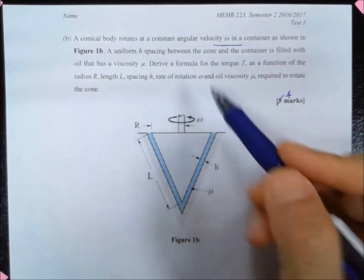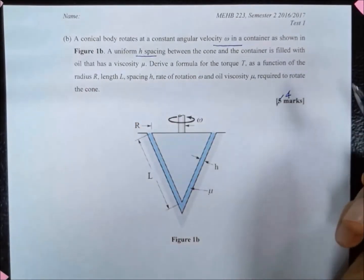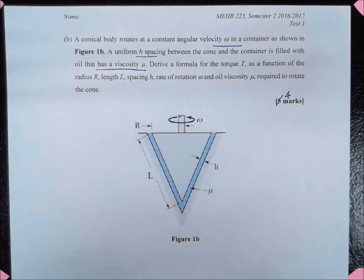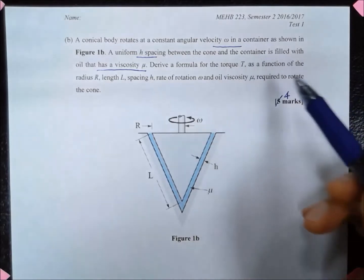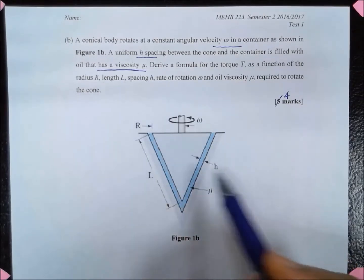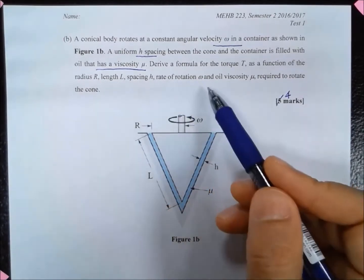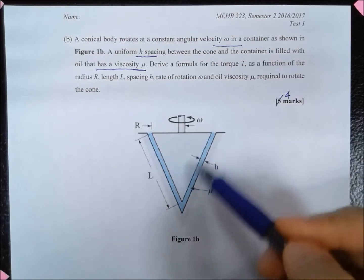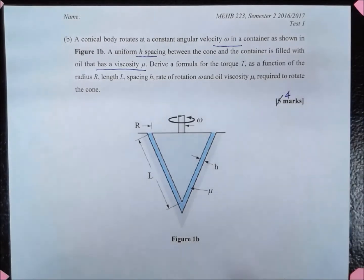The spacing between the cone and the container is equal to h, and the space is filled with oil which has viscosity mu. We are asked to determine a formula for the torque T as a function of the radius R, the length L, spacing h, the rate of rotation omega given in radians per second, and the viscosity of the oil mu, which is required to rotate the cone.